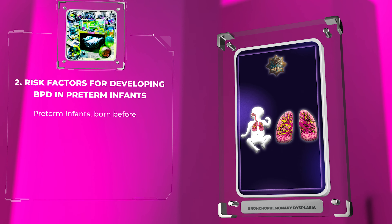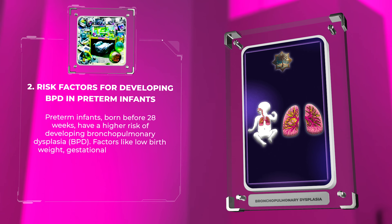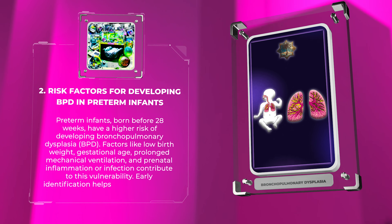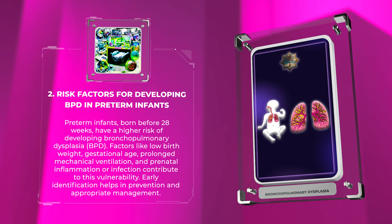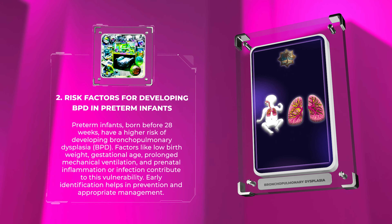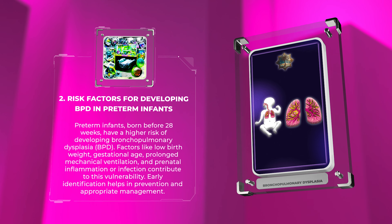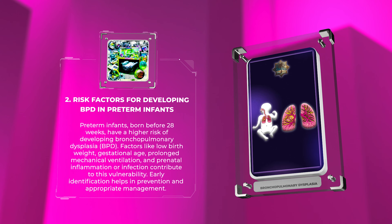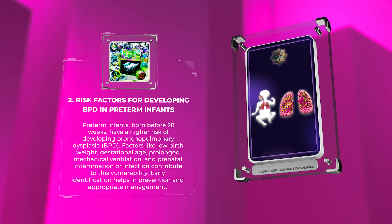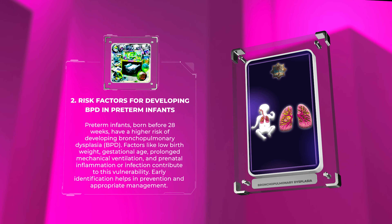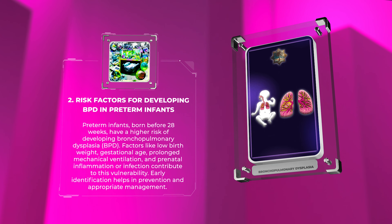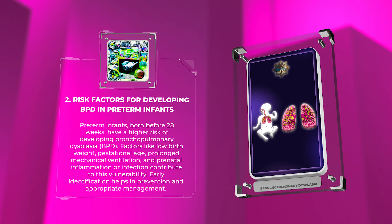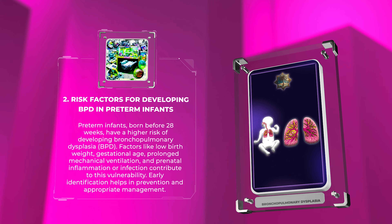Preterm infants born before 28 weeks have a higher risk of developing bronchopulmonary dysplasia. Factors like low birth weight, gestational age, prolonged mechanical ventilation, and prenatal inflammation or infection contribute to this vulnerability. Early identification helps in prevention and appropriate management.